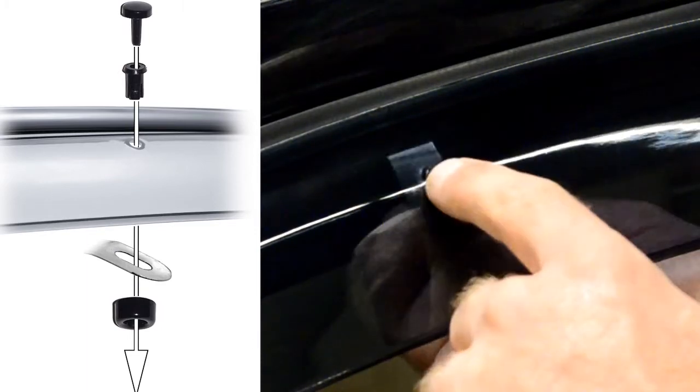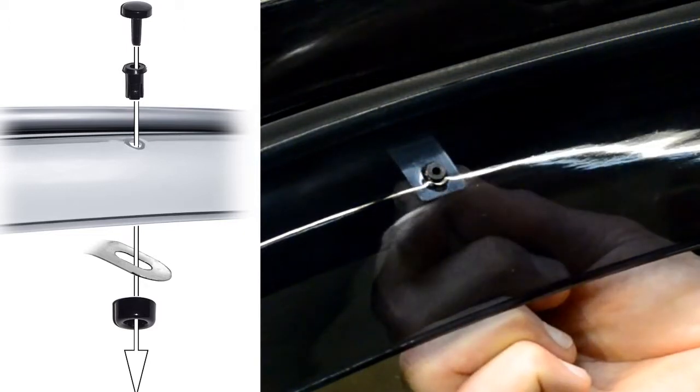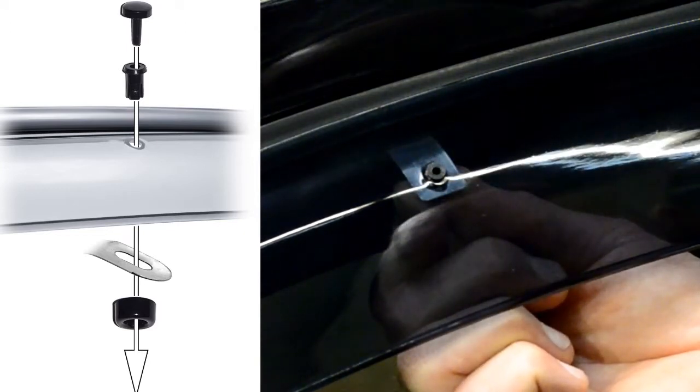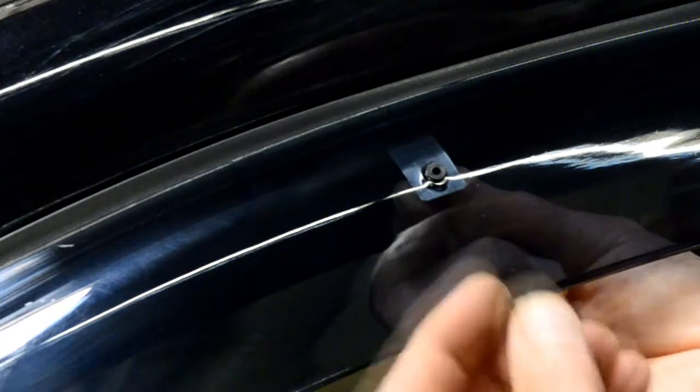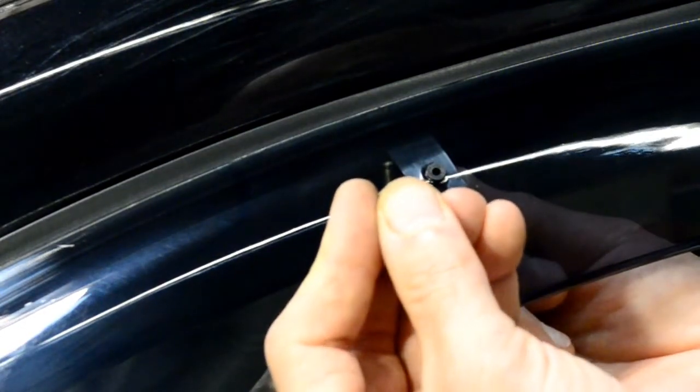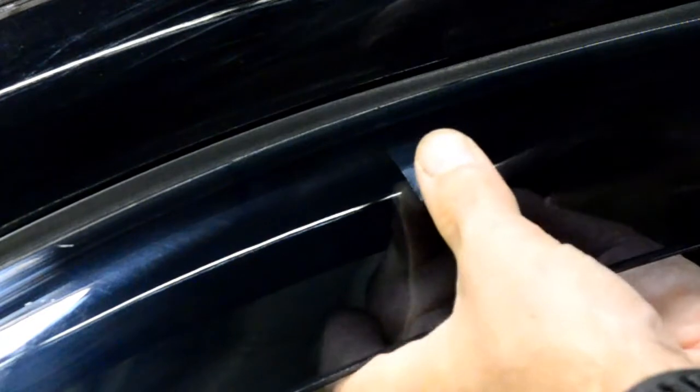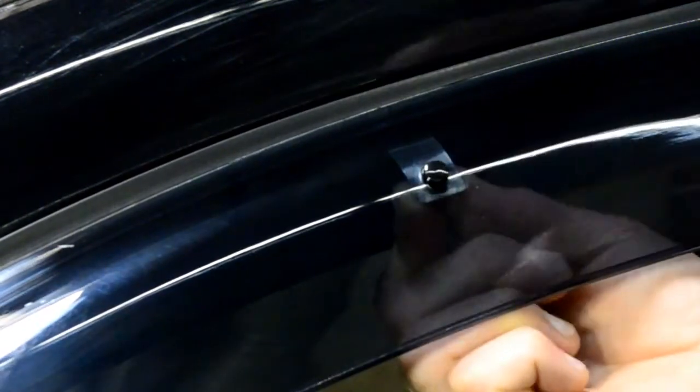We will then grab the circular piece and the center pin. Place the circular piece on the back side of the clip and put the center pin through the hole on top of the visor. Then, grab the locking pin and push it through the center to lock everything in place.